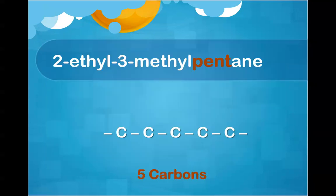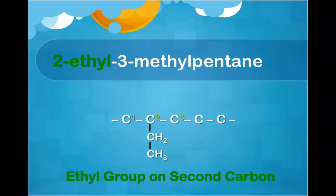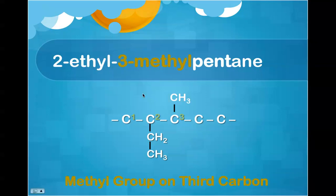Let's go from a name and build what compound we have. We always start with our carbon chain, found at the very end of the compound name. Here we have pentane, representing five carbons with all single bonds. Numbering the carbons, on my second carbon I have two ethyl — ethyl contains two carbons as a side chain. Then my last part is the three methyl group: on the third carbon, I have one CH3 group attached. So I have my pentane, my 2-ethyl, and my 3-methyl, giving me my entire compound.